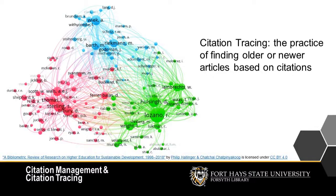Once you have a citation manager, it becomes easier to use advanced research techniques, such as citation tracing. Citation tracing is the practice of finding older or newer articles based on how authors have cited each other. It's useful because it can help you find more articles on an obscure topic or understand how experts in your field are reacting to new ideas.